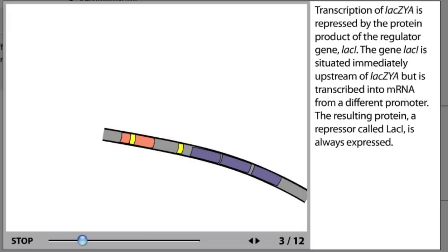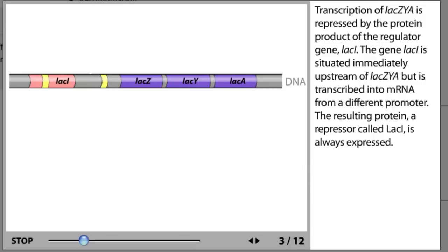Transcription of lacZYA is repressed by the protein product of the regulator gene lacI. The gene lacI is situated immediately upstream of lacZYA, but is transcribed into mRNA from a different promoter. The resulting protein, a repressor called lacI, is always expressed.